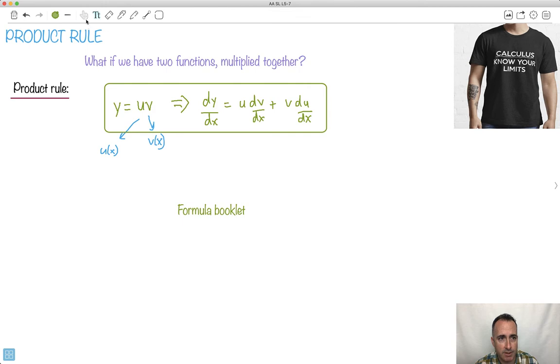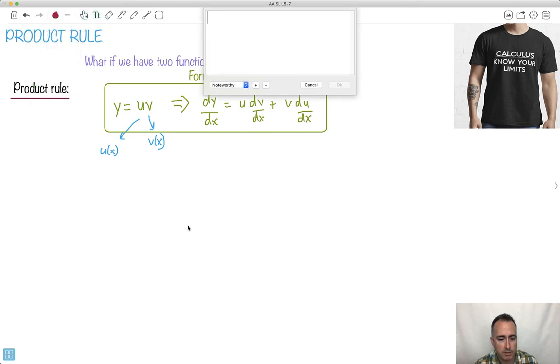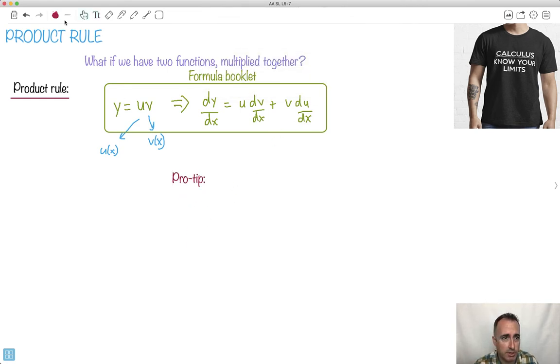Now what do we do with this? I think there's maybe a nicer way to do it, maybe I'll give you a pro tip here. So this is the official version, I'm going to give you a simpler version of it. I like to say it like this: y primed equals u v primed plus v u primed, I think this is a little bit more compact.